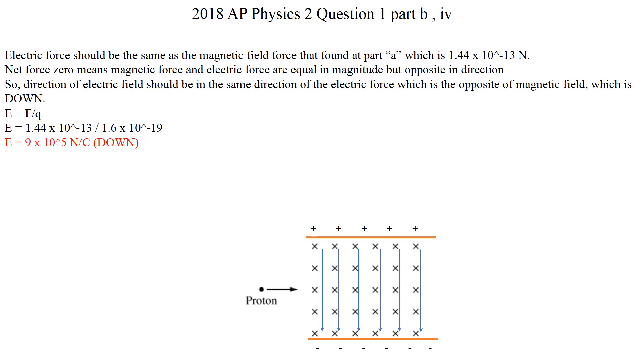So in the fourth part, what's happening is next, an electric field is applied in the same region as the magnetic field, such that there is no net force on the first proton as it enters the region. Calculate the magnitude and indicate the direction of the electric field relative to the coordinate system shown in part B.